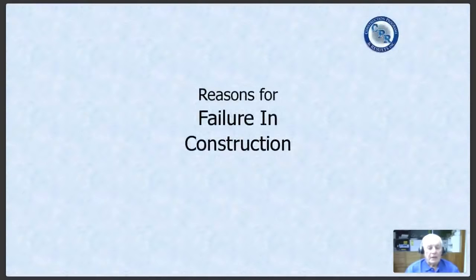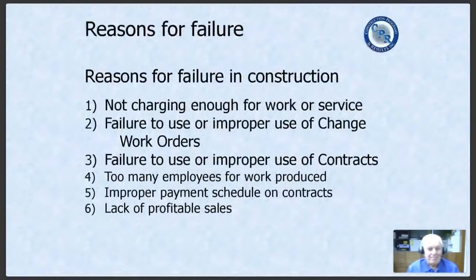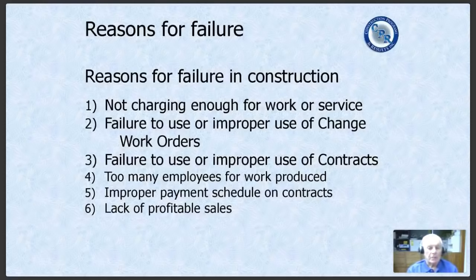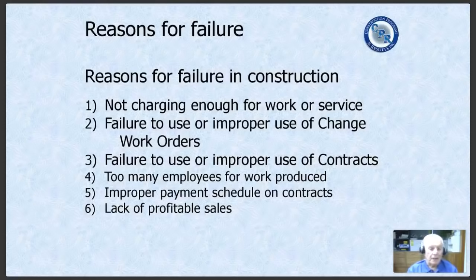There are six major reasons why people go out of this business — three major and three minor. Reason number one, and the largest one that takes out over 90% of all contractors, is not charging enough for the work or service they provide. When people start a construction business, one out of three won't make it to the end of the first year, and two out of four will not make it to the end of the second year. We've got a pretty high failure rate in this business.